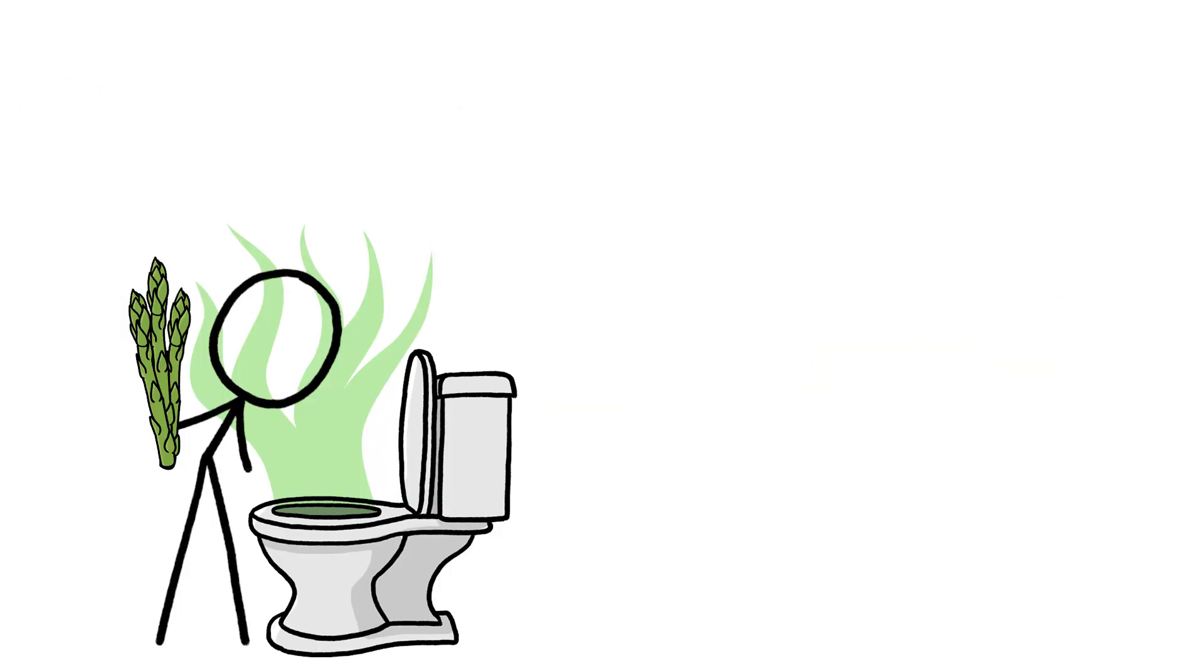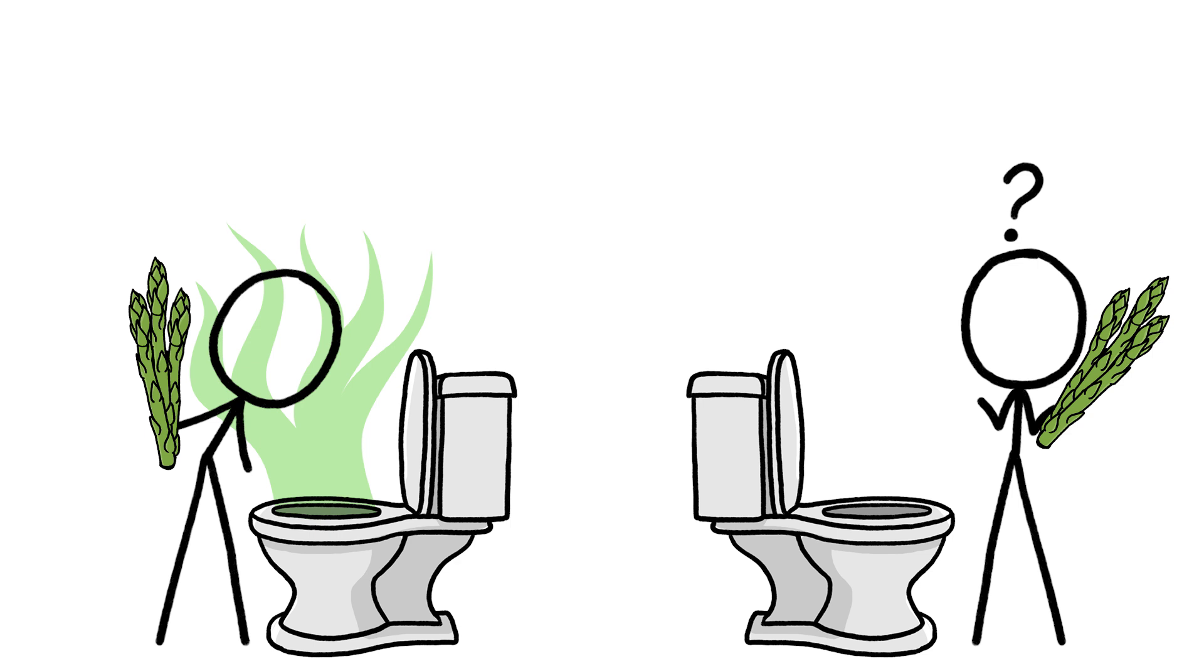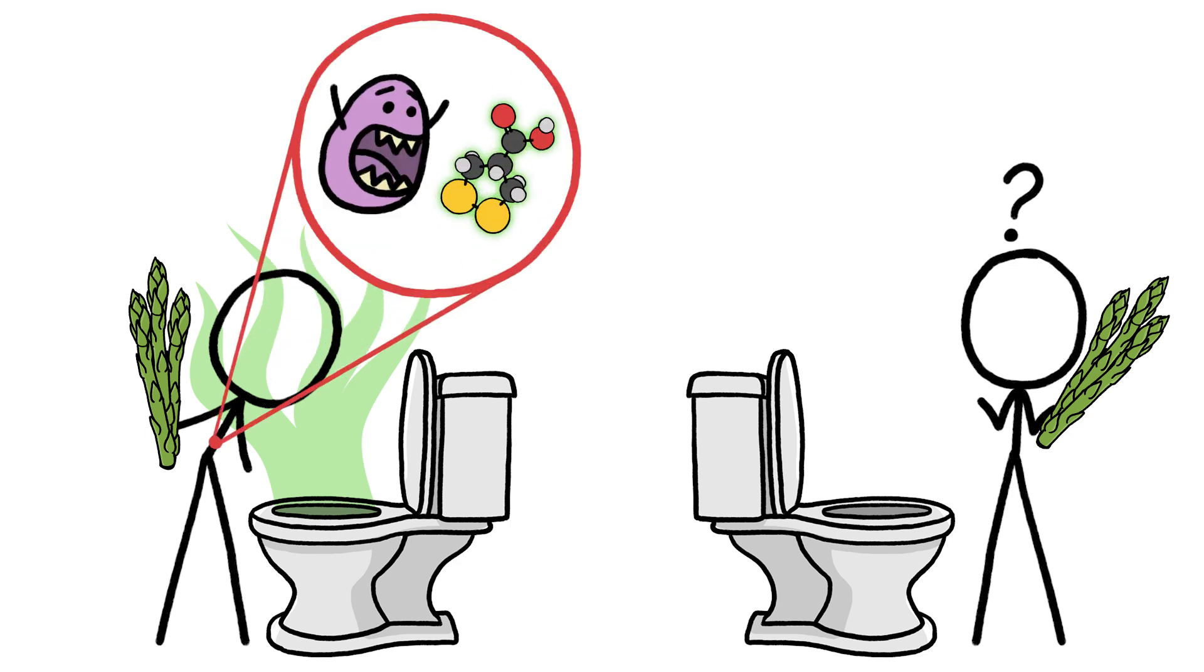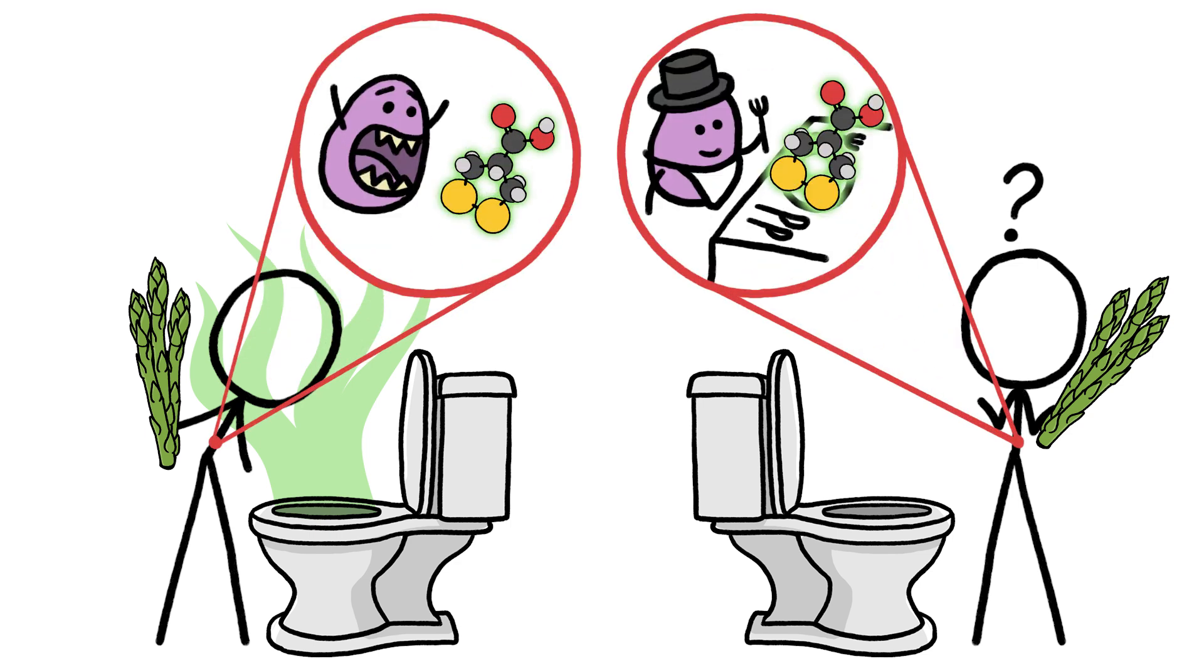But that doesn't explain why some people get stinky pee, and others don't. Perhaps stinky peers, or their gut microbes, metabolize that molecule differently than their less-funky counterparts.